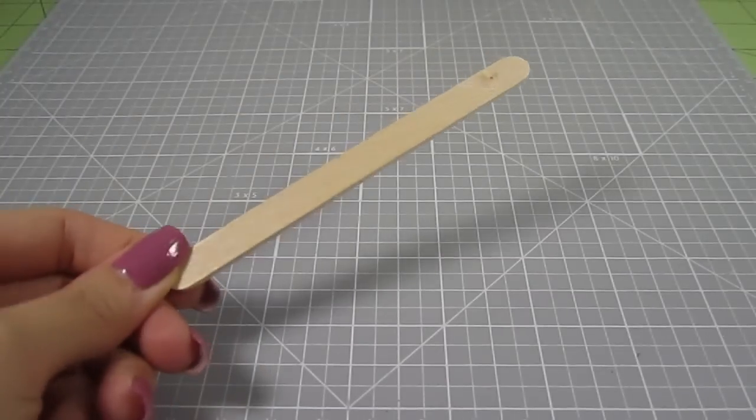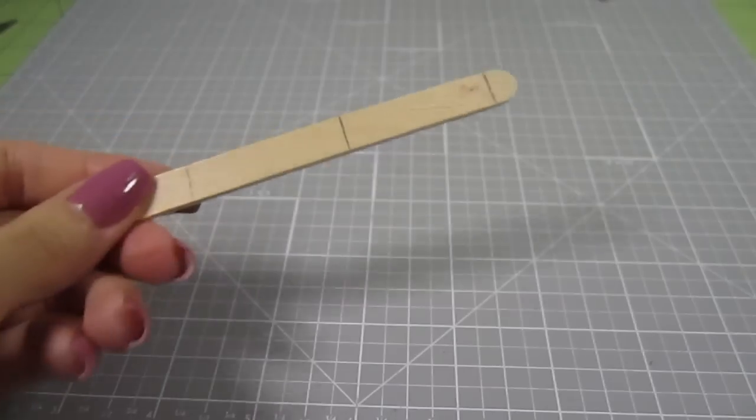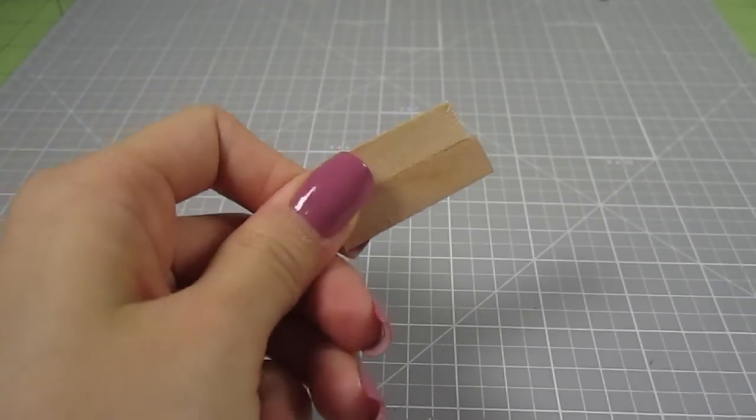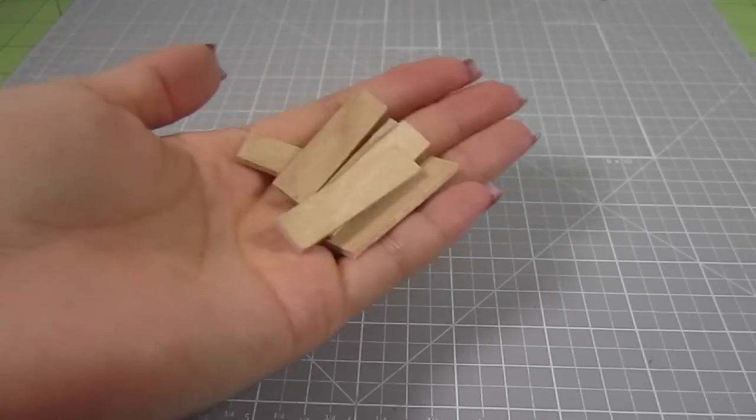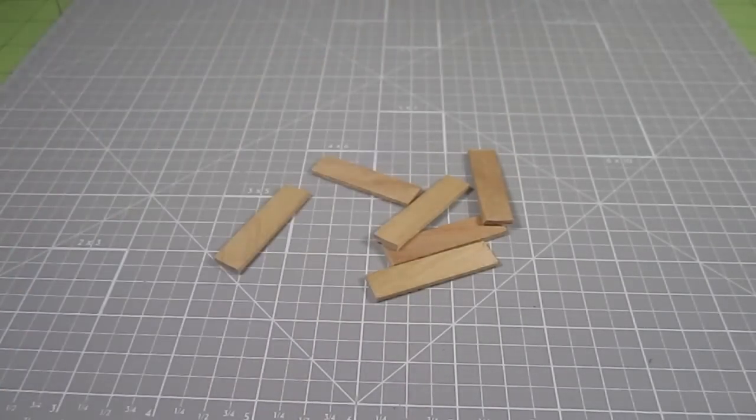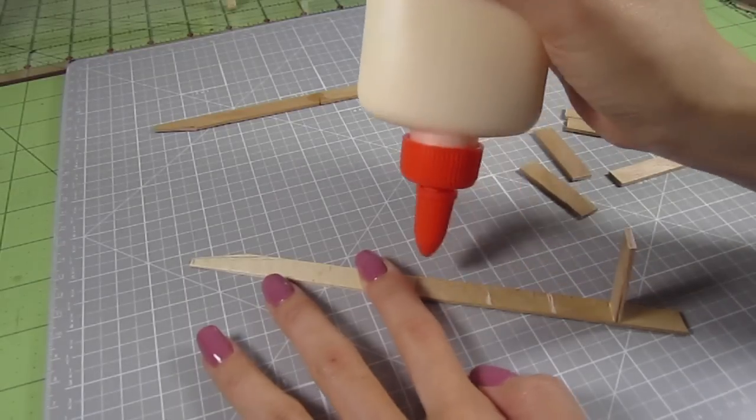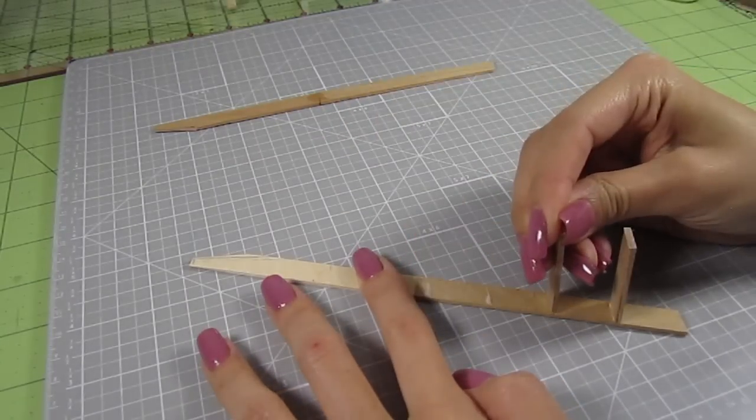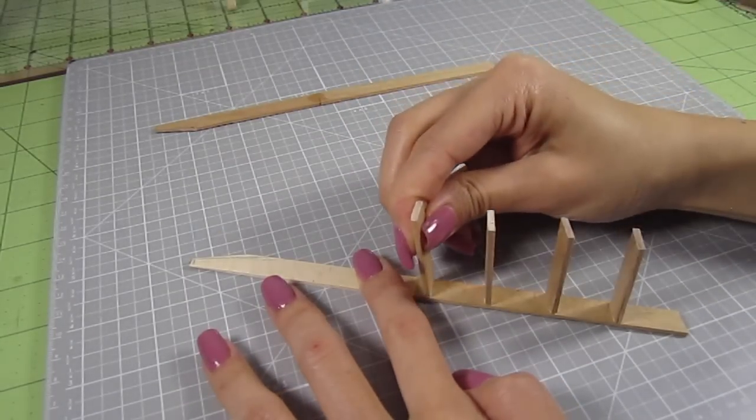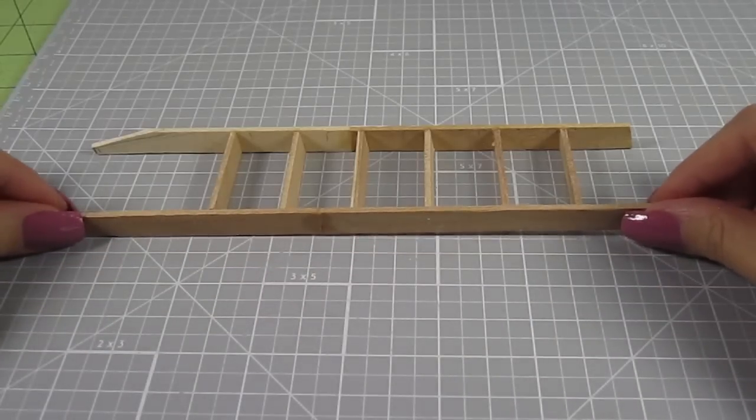Okay, let's make some steps for the ladder. From another popsicle stick, draw and cut out 2 1 and a half inch sections. Do this with 2 more popsicle sticks so you end up with 6 in total. Glue them between the 2 ladder sides. Starting 3 fourths of an inch from the bottom, I just glue them to one side leaving a 3 fourths of an inch space in between the pieces. After that's dry, I glue the other side on.